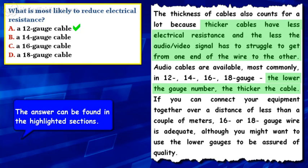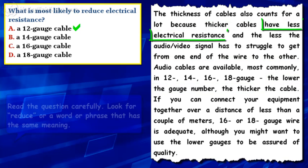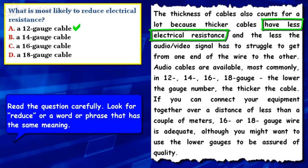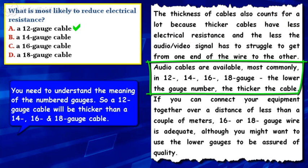The answer can be found in the highlighted sections. Read the question carefully. Look for 'reduce' or a word or phrase that has the same meaning. You need to understand the meaning of the numbered gauges, so a 12-gauge cable will be thicker than a 14, 16, and 18-gauge cable.